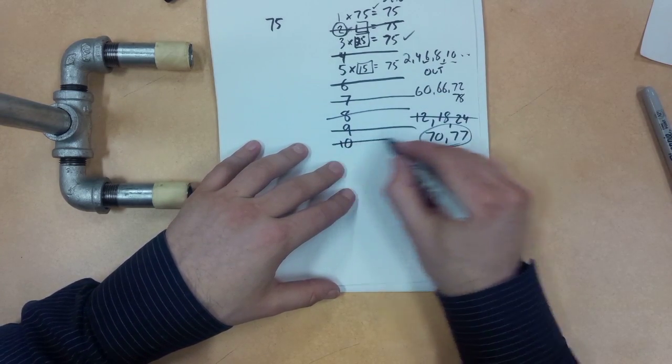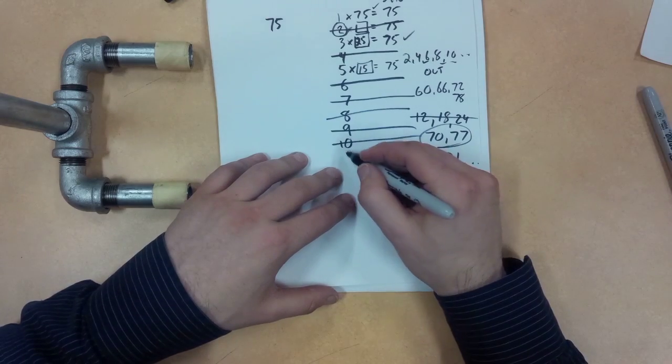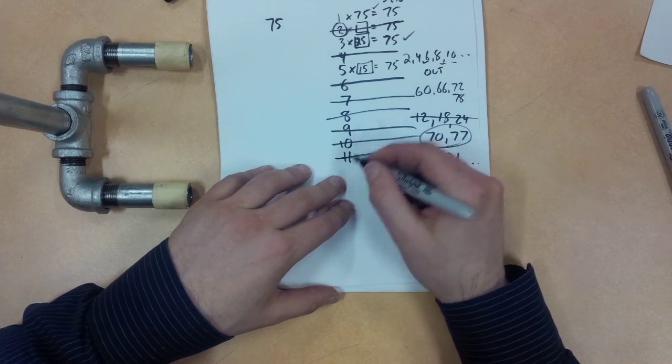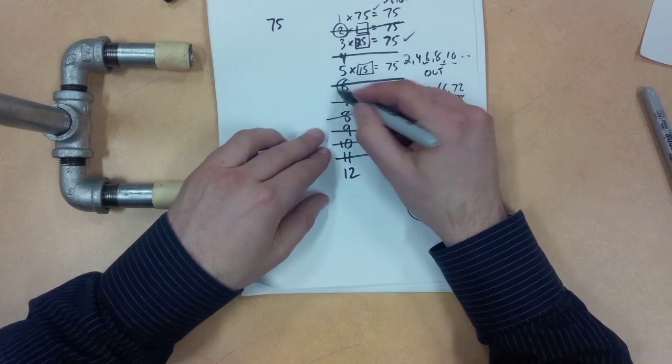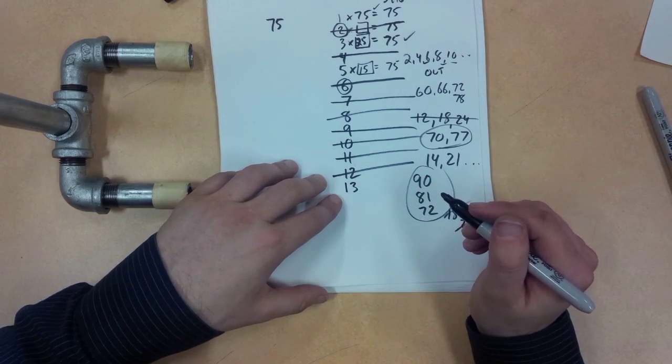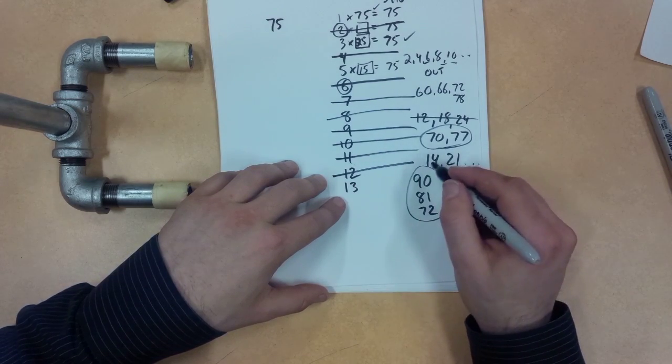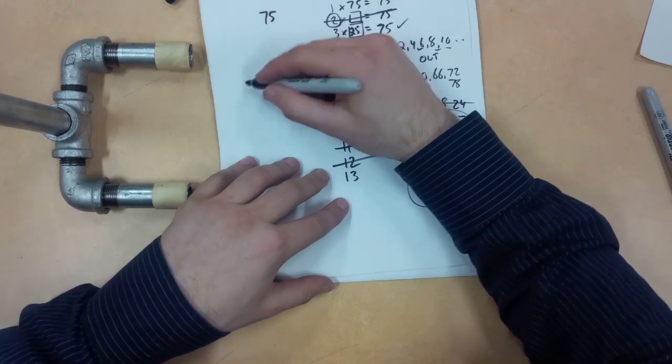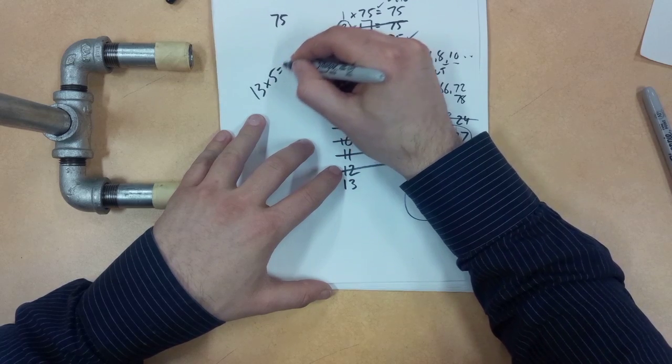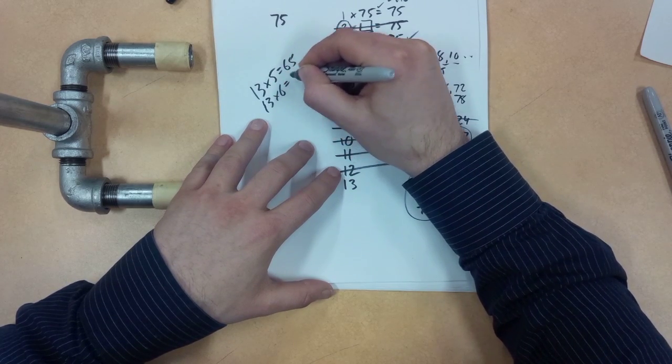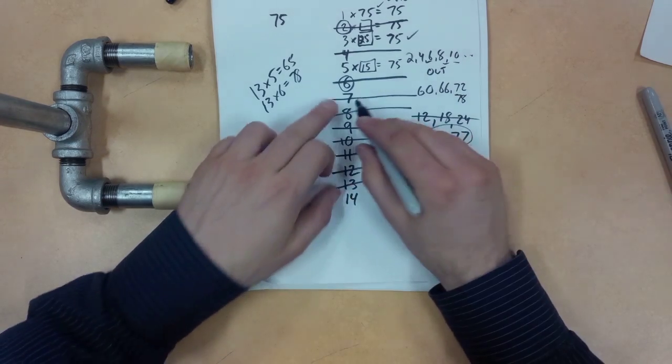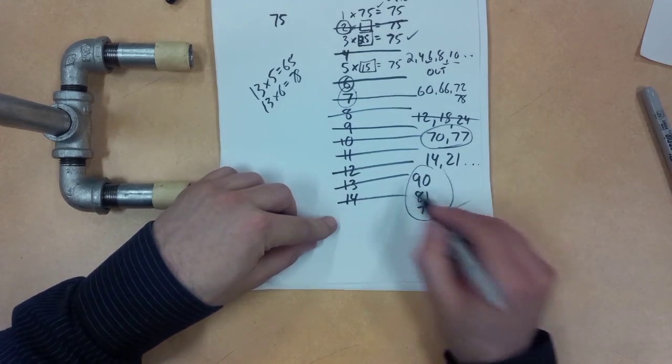10 is out, we know. So that means 20, 30, 40, 50 are all out. 11, 77, 66, 11 is out. 12, let's see. Well, if 6 is out, that means 12 is out. 13, let's see. This is really sloppy, but that's okay. 13 times 5 is 65. So 13 times 6 is 78. So we know 13 is out. So that means 26 would be out. 14. Because 7 is out, that means 14 is out.